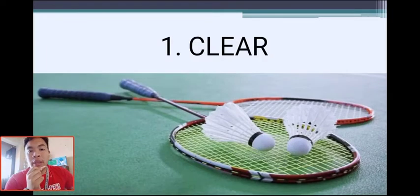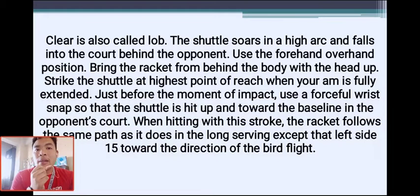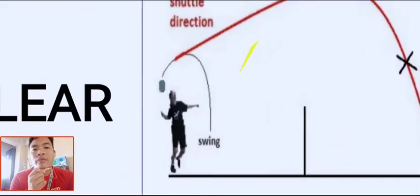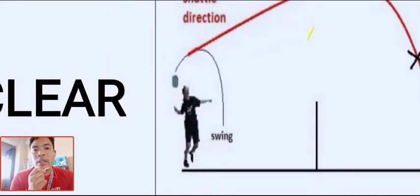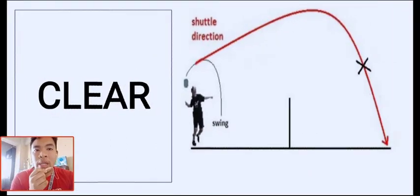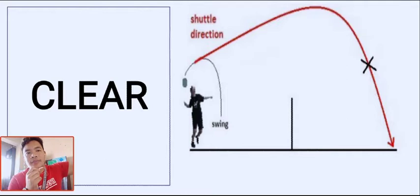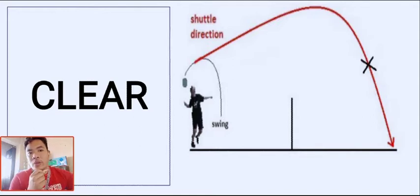The clear is one of the easiest ways to play badminton. Using the forehand overhead position, lift the shuttlecock and aim for the direction toward the opponent's baseline. The clear is simply an overhead shot of the shuttlecock to the other side of the court.